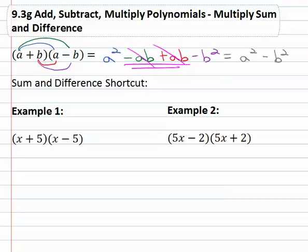And you may notice that a squared minus b squared really came from multiplying the first terms together. The first terms together a times a and the last terms together b times negative b. The other terms all subtracted out to zero.